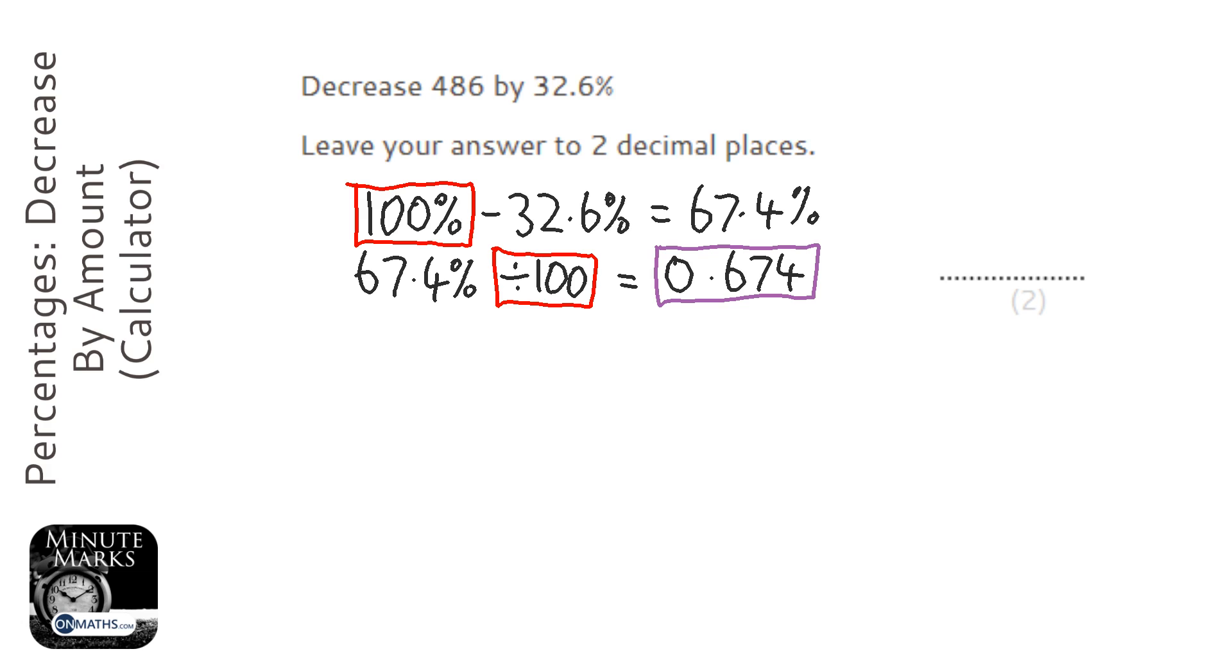So if we put in 486 and we times it by that multiplier, OK, and we're going to do that on the calculator now. So 486 times 0.674. Then we automatically get the answer.